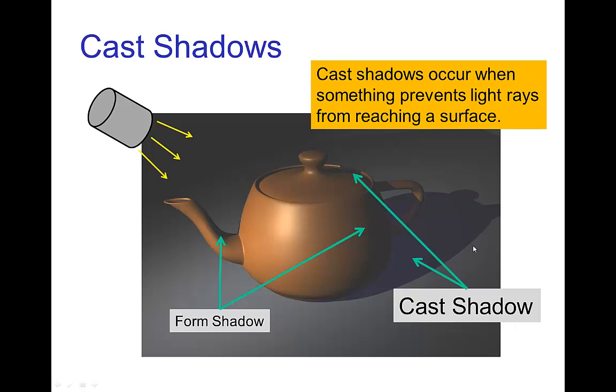A cast shadow occurs when an object is blocking light from a light source and we see that in a shadow cast on another surface, like this teapot is casting a shadow itself on the floor. We see that behind the teapot.